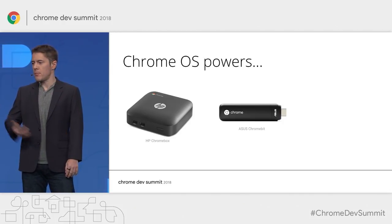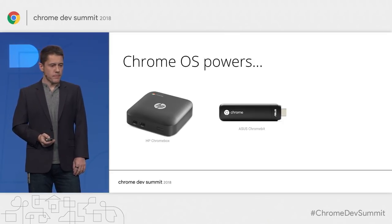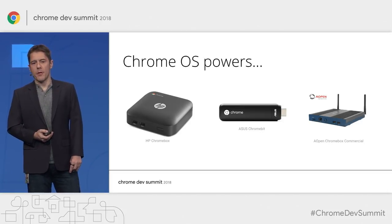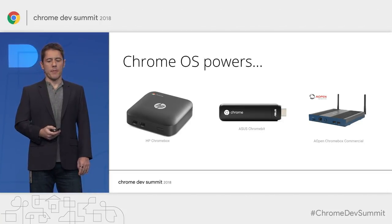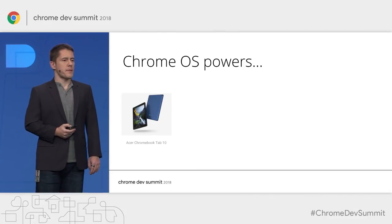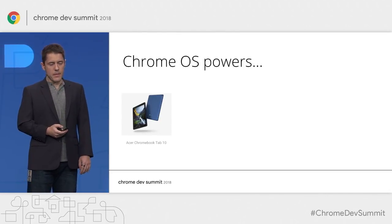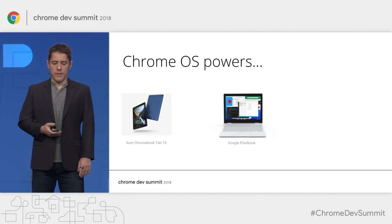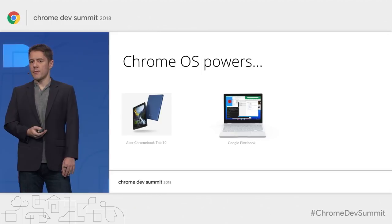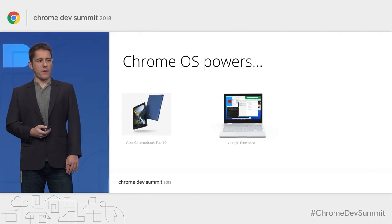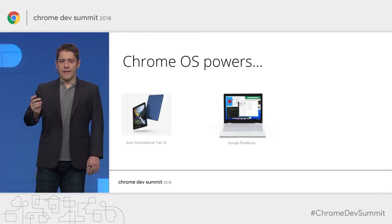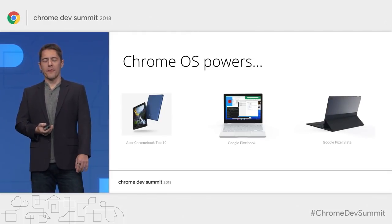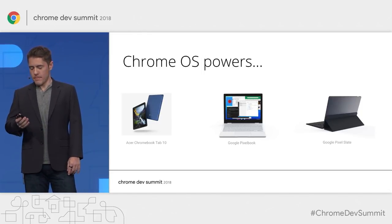There are also mega displays — the Chromebox commercial powers digital signage and kiosk displays. This summer we saw the first tablet powered by Chrome OS: the Acer Chrome Tab 10. And of course, Google has its own lineage of devices — the Pixelbook, the flagship device, which is at 75% off for you here tonight. And our latest offering, the Pixel Slate, was announced last month.